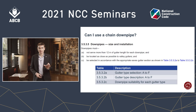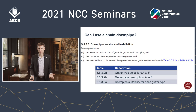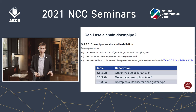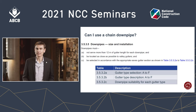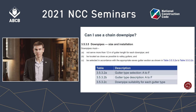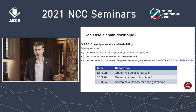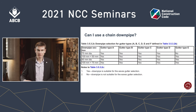Table A gives you a gutter type depending on your rainfall intensity and roof area. In my house I've got Type A gutters, which is good for my rainfall intensity and roof size. Table B describes what the various gutter types are — Type A on my house is medium rectangular with at least 65,000 square millimeters cross-sectional area.